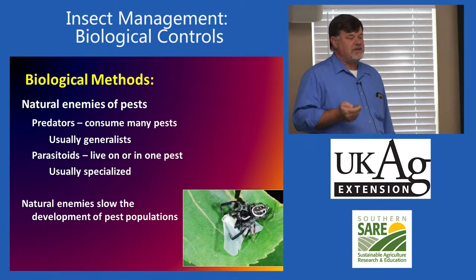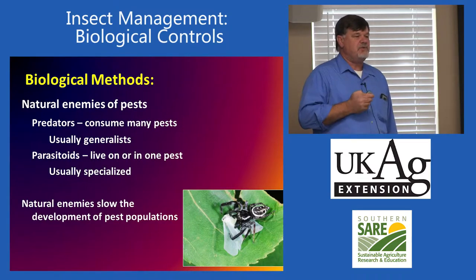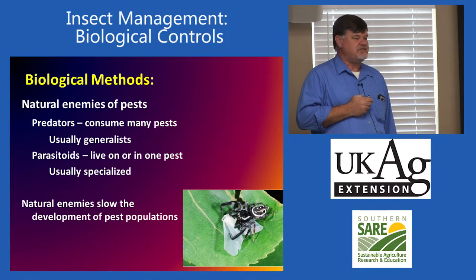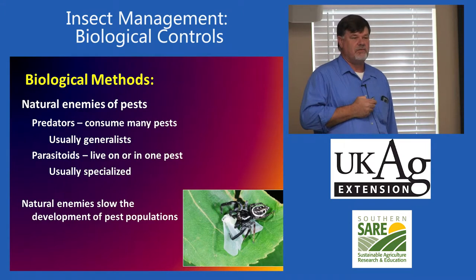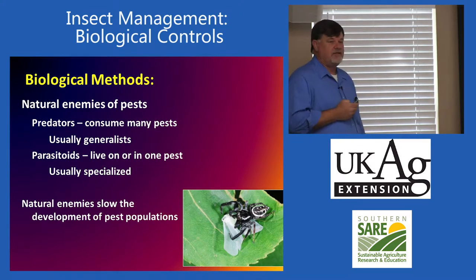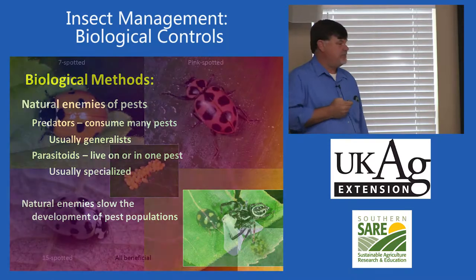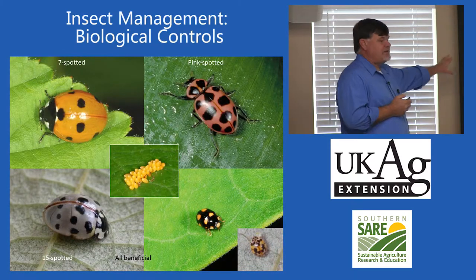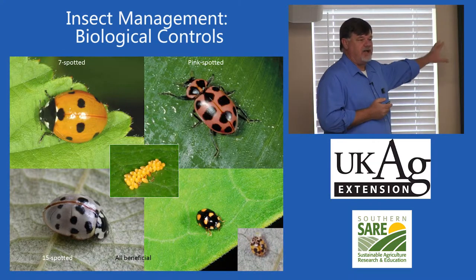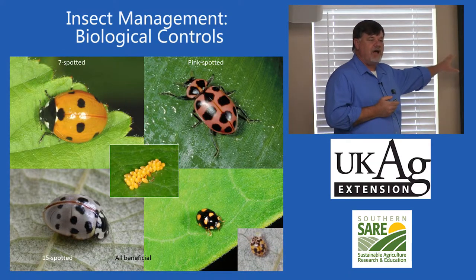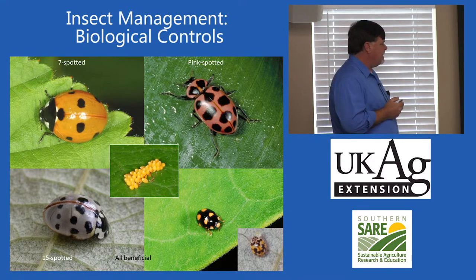One of the biggest problems I see with people is they don't know how to recognize the natural enemies. They see some things on their plants and they say, must be time to spray, and they're knocking back their natural enemy population. So I try to emphasize recognizing the beneficial insects.